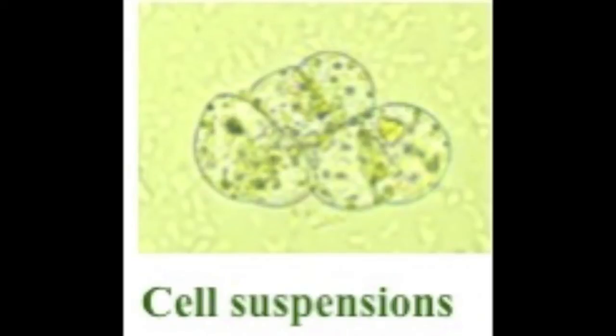Cell suspensions are obtained from friable calli — some cells of such callous in liquid medium are released into the medium after agitation. These suspensions generally consist of a great variety of cell types and are less homogeneous than the callous cultures.